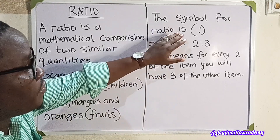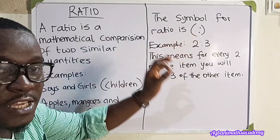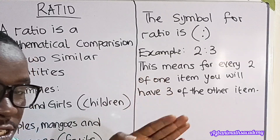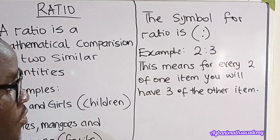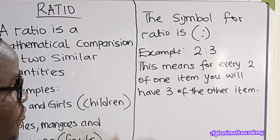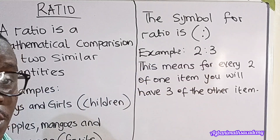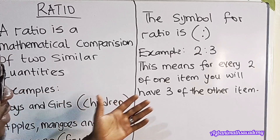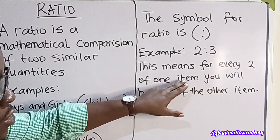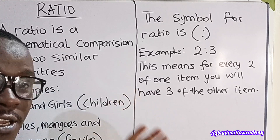The symbol for ratio means 'is to.' One item is to another item — you're comparing one item to another item. For example, if you have two is to three, that means for every two of one item, you will have three of another item.